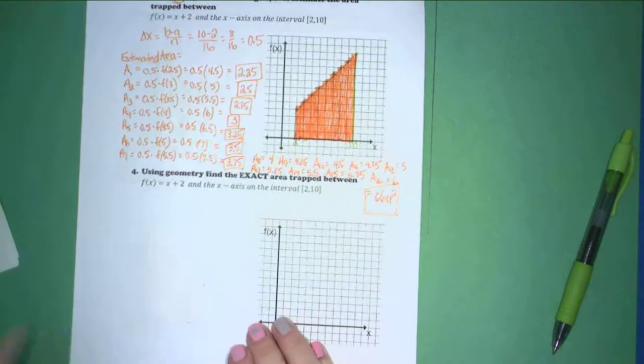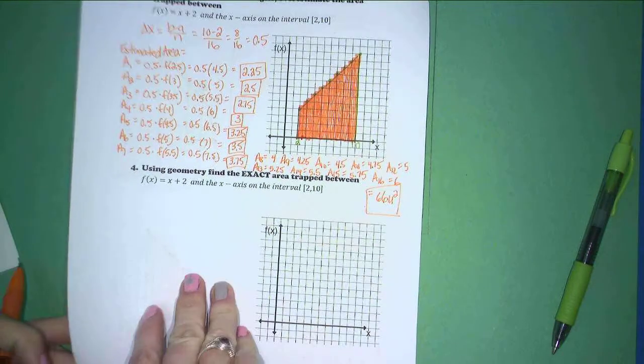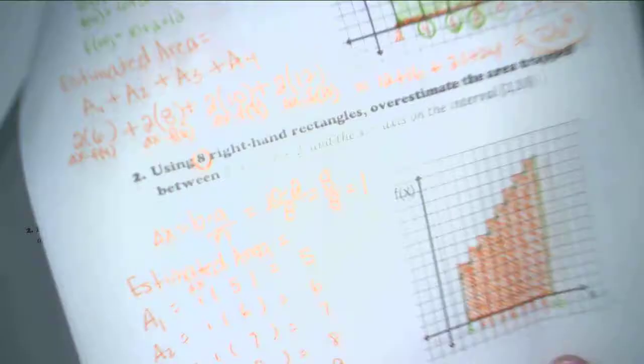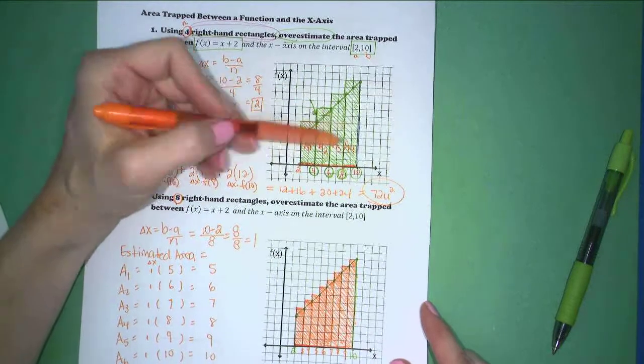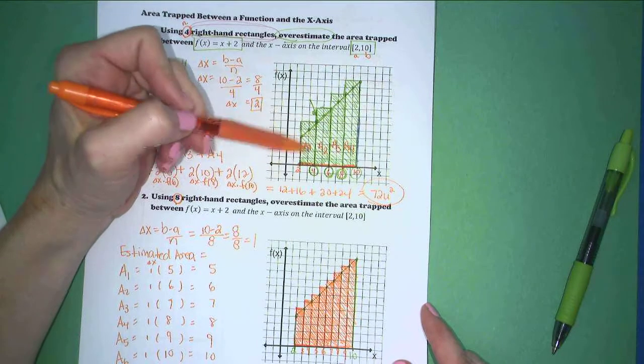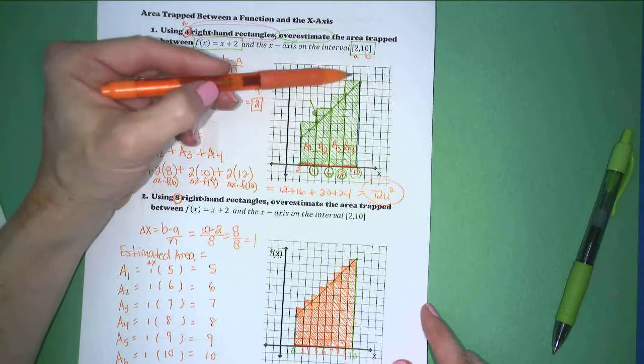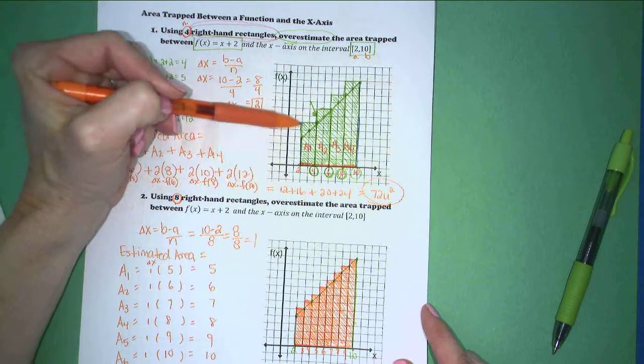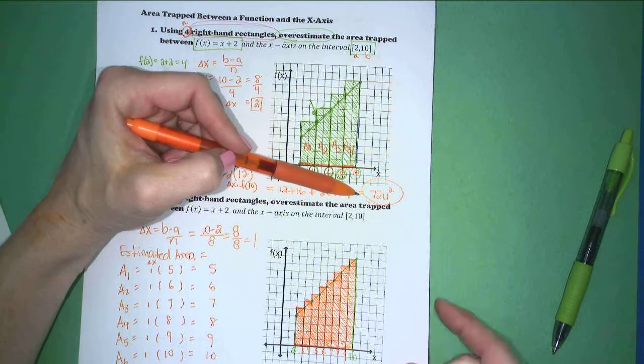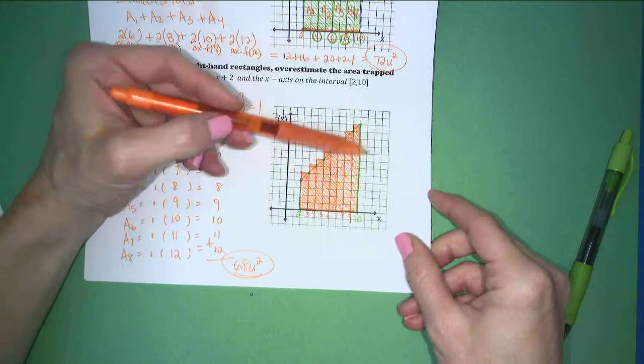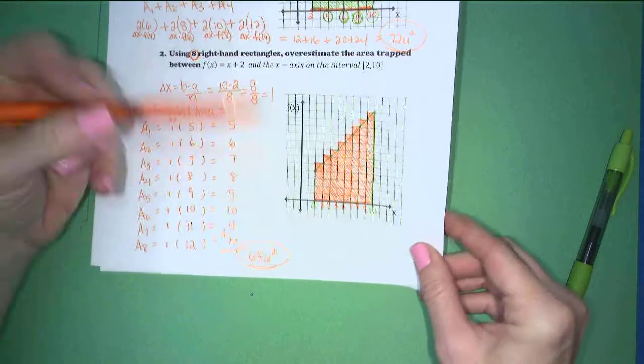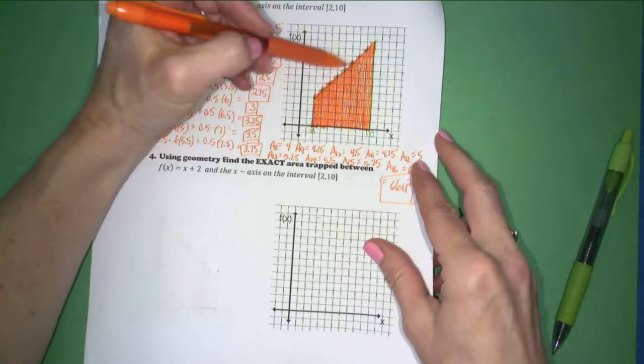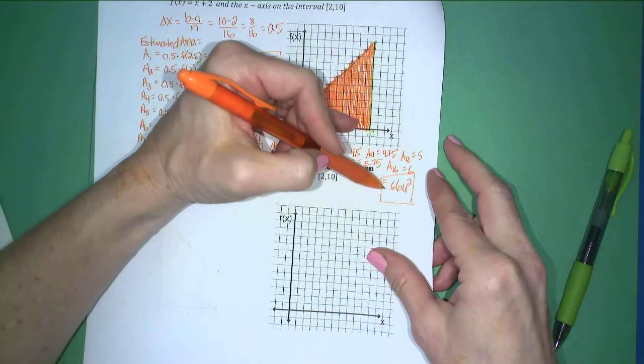The important thing to see in this exercise is that we started with the same space, same area we're trying to estimate. When we made 4 of these, we had a lot of error. We got 72 square units. When we made 8 of them, we had less error. 68 square units. Now, we made 16 of them. Less error. We get 66 square units.